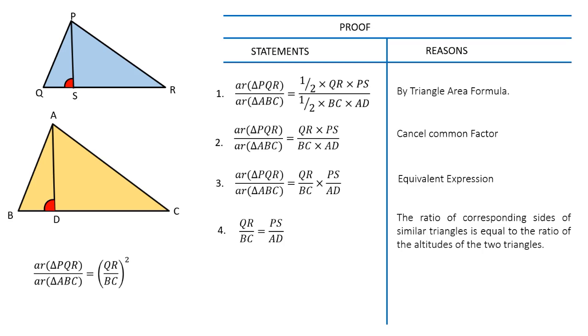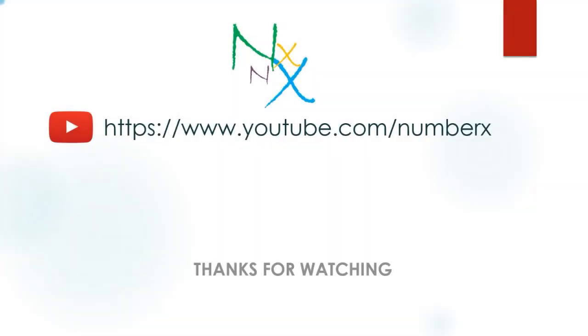Let us move ahead with our proof. By using statements 3 and 4, the ratio of areas reduces to the product of QR over BC to itself, which is equal to the square of the ratio QR over BC. By using similar argument, we can prove this theorem for other sides also.